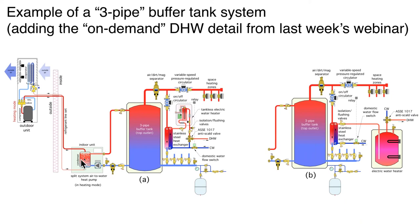Then we're putting that heat back into the tank. The Argosy tank does have a nice inch-and-a-quarter takeoff up on the top, so we're pulling the hottest water directly off the top of that tank. Showing another air-and-dirt separator here, and we've got a couple of pathways — a variable-speed, pressure-regulated circulator going off to some zone valves, or other valve-based zoning like thermostatic radiator valves.